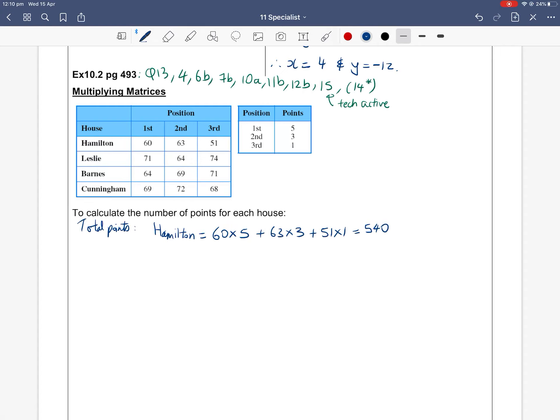Hamilton scored a total of 540 points in this sports competition. We would do the same for Leslie House. They had 71 people come first and every person that came first got five points, then 64 people came second and every second person got three points, and then 74 lots of one. Using a calculator, Leslie scored a total of 621 points.